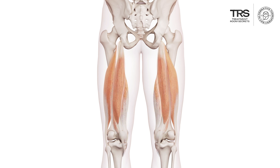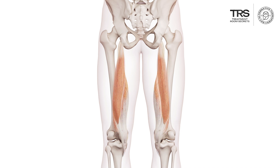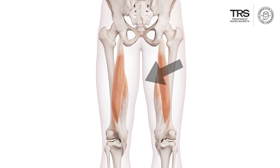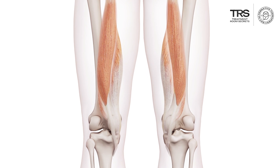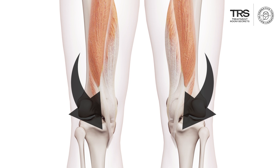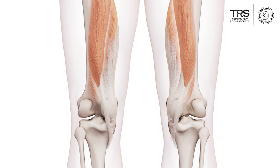The inner part of the hamstrings is made up of two muscles with very long names, both beginning with 'semi,' meaning half: the semitendinosus and the semimembranosus. Both have very long tendons; the semitendinosus is more superficial and the semimembranosus is tucked underneath. They act together — the tendons run around the inside and back of the knee, sweeping around to attach to the tibia. This combined structure, called the pes anserine, is an important stabilizer of the knee.